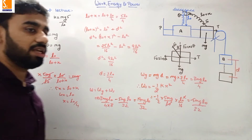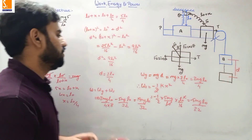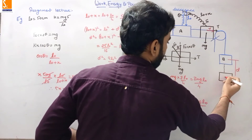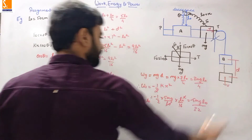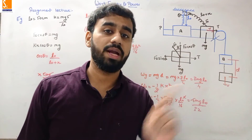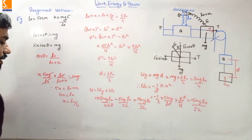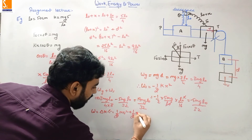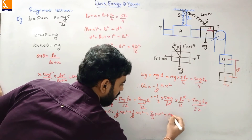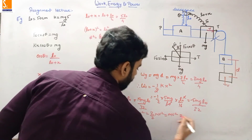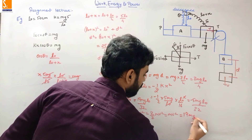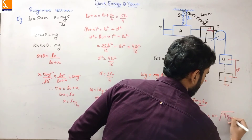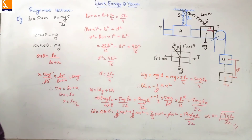By the work-energy theorem, total work done equals change in kinetic energy. Initial kinetic energy of the whole system is zero. Final kinetic energy = ½mv² + ½mv² = mv² (since both blocks have the same speed v). So mv² = 19MGL₀/32. M cancels, giving v² = 19GL₀/32, and the final velocity v = √(19GL₀/32).